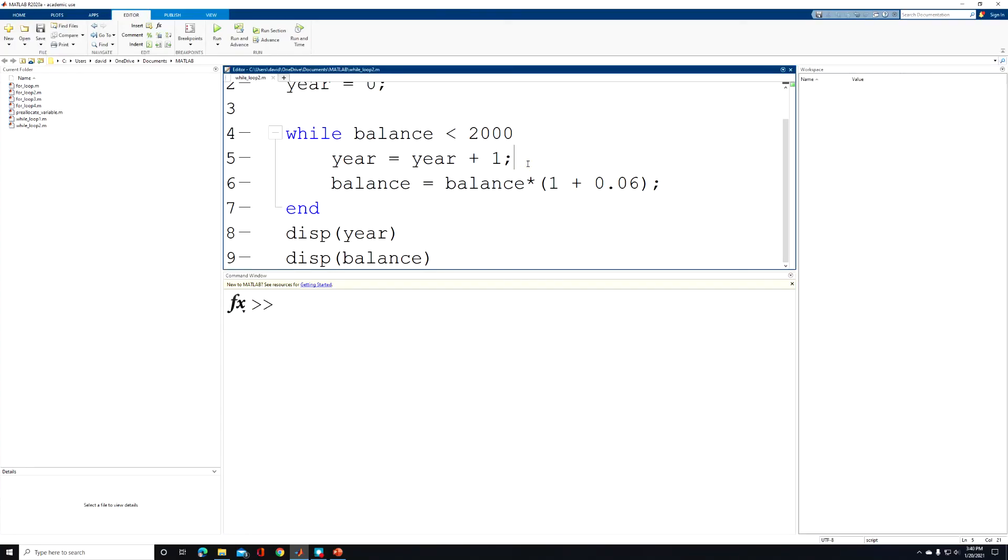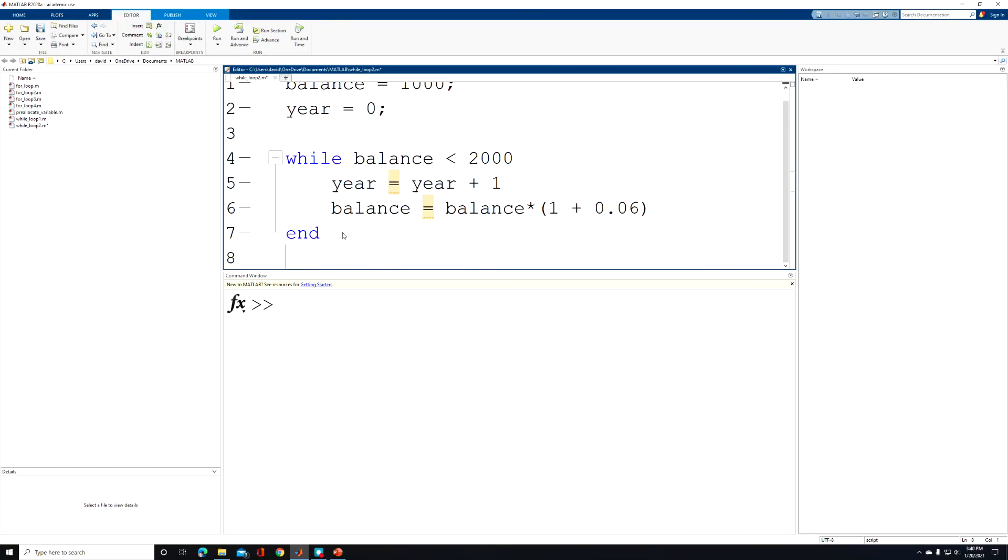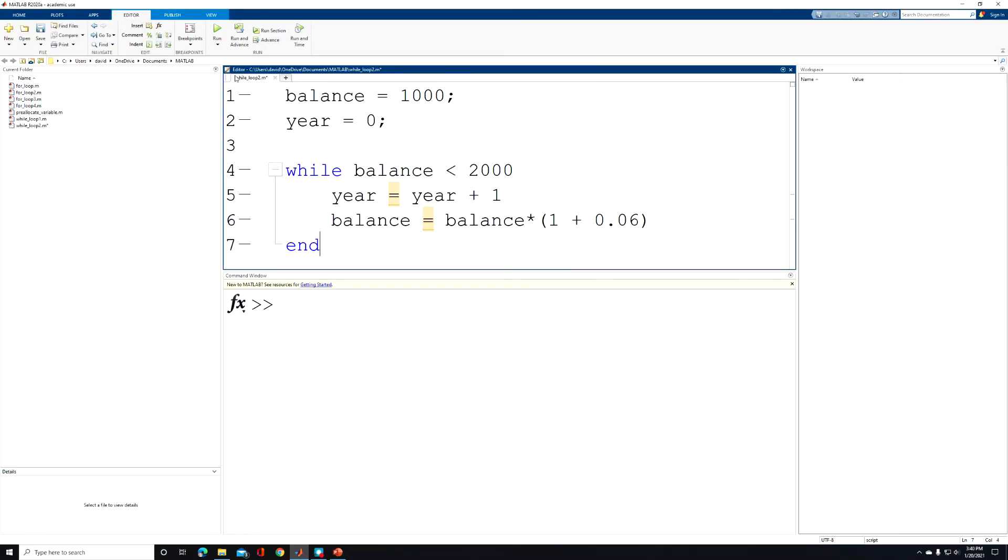So I'm going to remove the two semicolons from our statements inside of the while loop. And what this will do again is output the year and the balance during each loop pass. So because I'm already going to be displaying this, I'm going to go ahead and remove these last two lines of code. So now I'll click save and run.